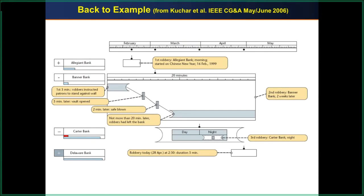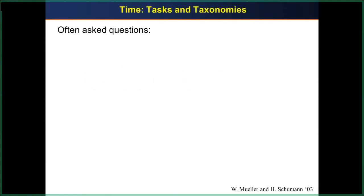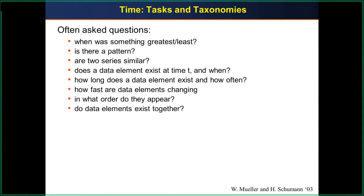Lots of people have come up with different ways to show inclusivity and probabilities, and over time we've come up with different visual languages to show timelines. Often when it comes to time, the questions are: When was something greatest? When was something least? Is there a pattern? Are two time series similar? Does a data element exist at time t, and where? How long does a data element exist, how often, how fast are data elements changing, what order do they appear, and do they exist together?